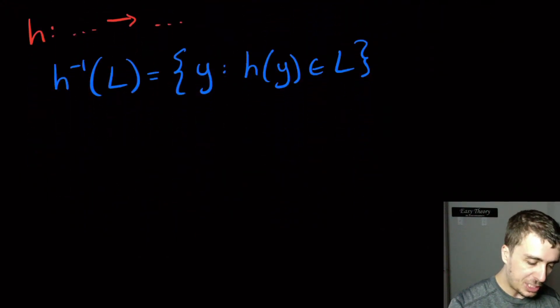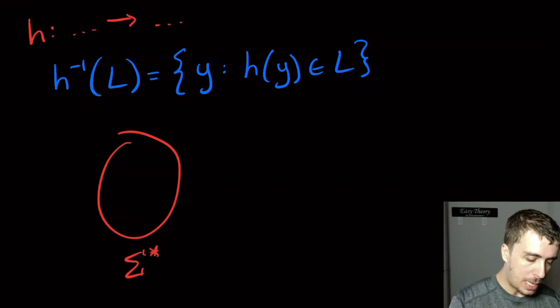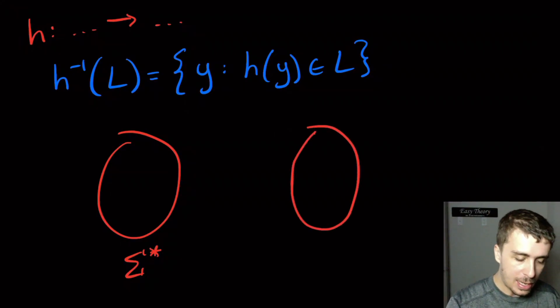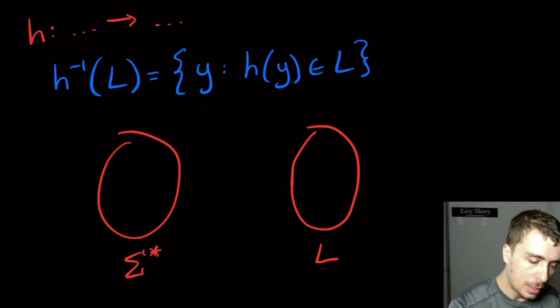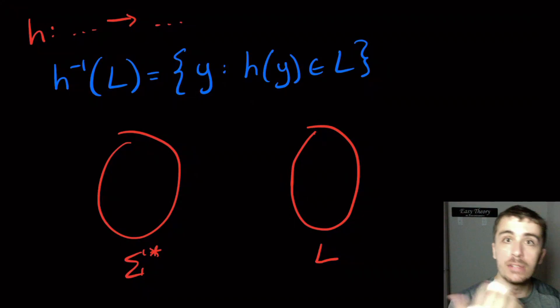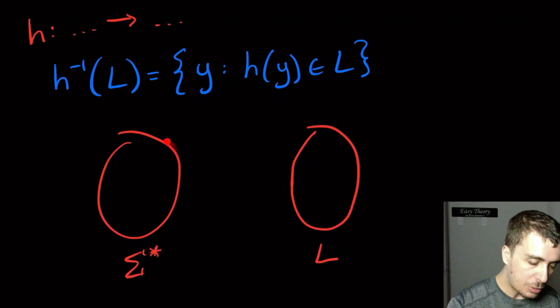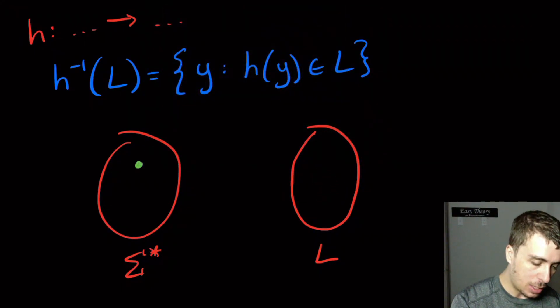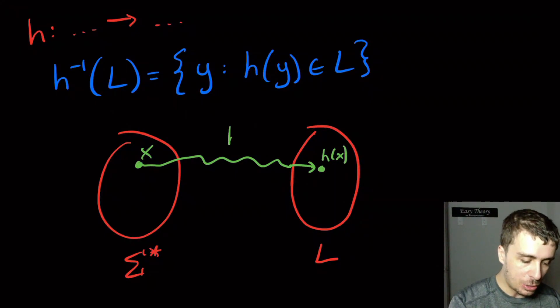So we're going to have two sets here. So this is the set of all possible strings in the domain of the homomorphism. I'm just calling it sigma, but you can call it whatever you like. And we have the language L here. So what we want to do is we want to decide the inverse homomorphism. So what we want to see is what strings in here when applied to H land in here. So we have some string, let's call it X. And let's say that applying H to it lands to H of X way over there.